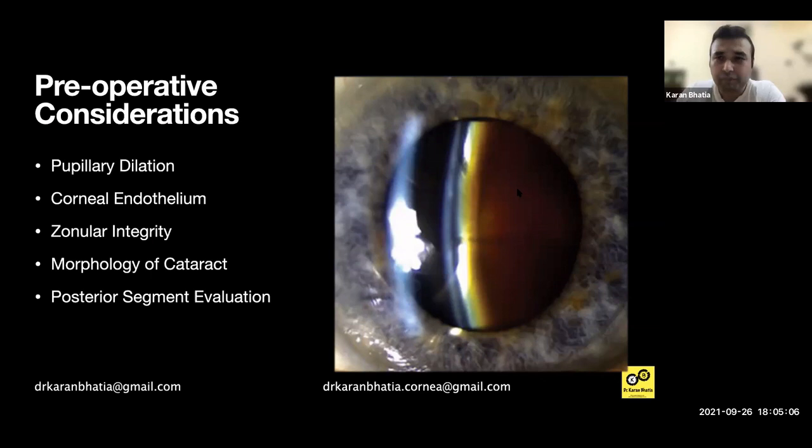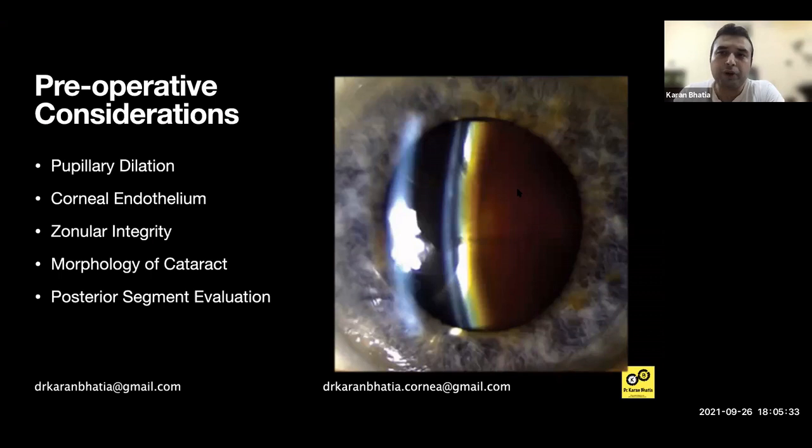Coming to the biometry aspect, generally in such hard and mature cataracts the IOL Master doesn't work that well. You can go for immersion biometry, and if that is not available, contact biometry. The formulas commonly used are the SRK/T formula and the Haigis Universal II formula. In such cases, if there is a cylindrical component, you should be doing toric IOLs as well.